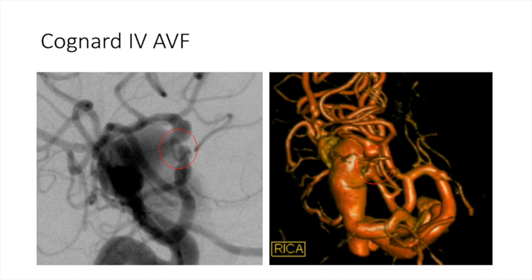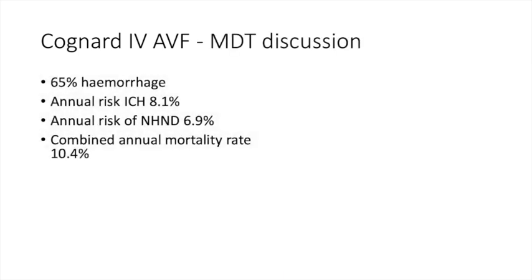These are very rare lesions characterised by a single or multiple arteries feeding directly into a vein. There are no dural arteries involved, and in the area highlighted they are characterised by a Pial branch anastomosing with the vein. We can still apply the Cognard grading system of dural arteriovenous fistulae in order to grade Pial AVFs.